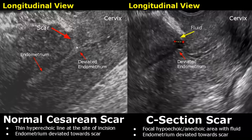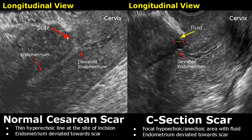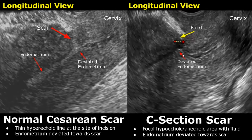Here is an image of a normal caesarean scar, which can appear as a hyperechoic line at the site of the incision in the myometrium. The endometrium will be deviated towards the scar. On the right side is another image of a C-section scar — there is a focal hypoechoic or anechoic area with some fluid and greater deviation of the endometrium.